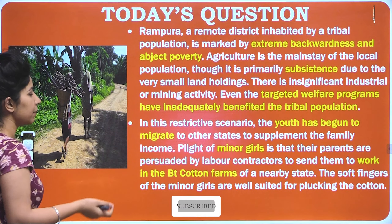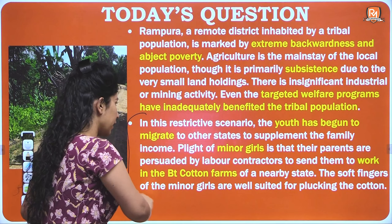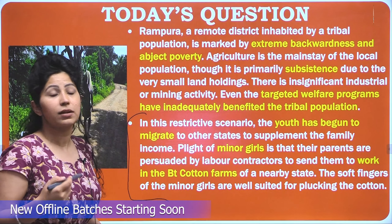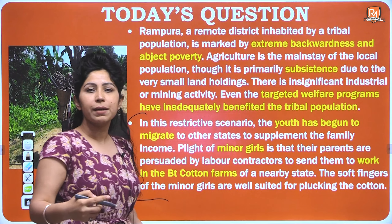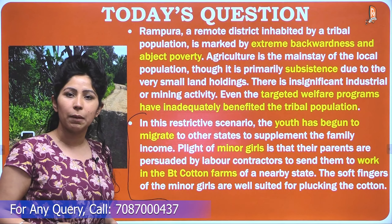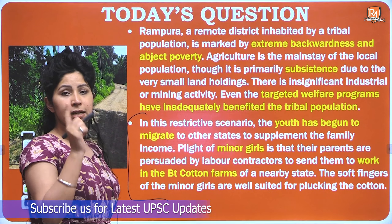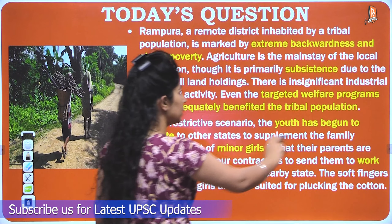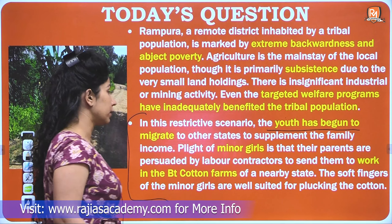Looking at the yellow terms in the second paragraph: the restrictive scenario means there are no solutions available locally, so the youth migrates due to abject poverty and no employment opportunities. You must provide a solution to youth migration — this is your next problem to address, in addition to the three points discussed earlier.